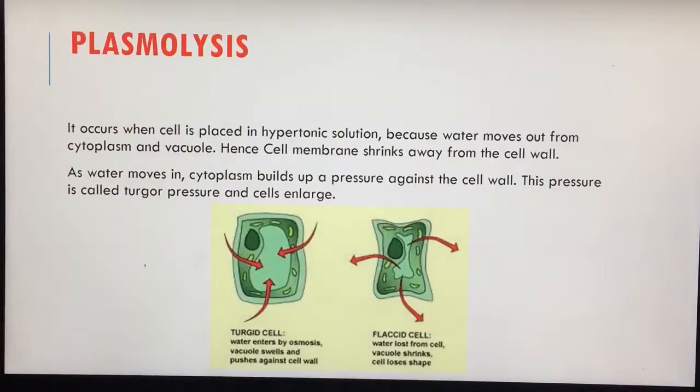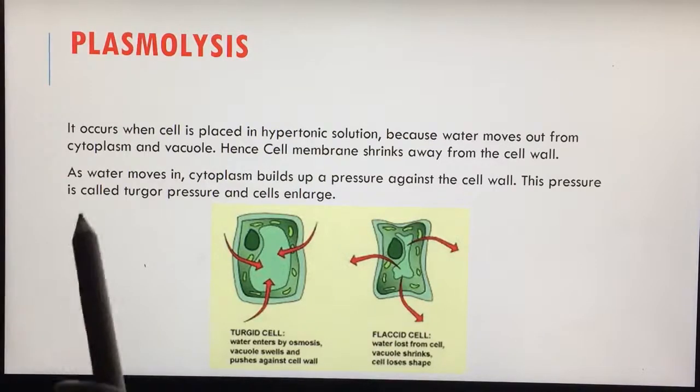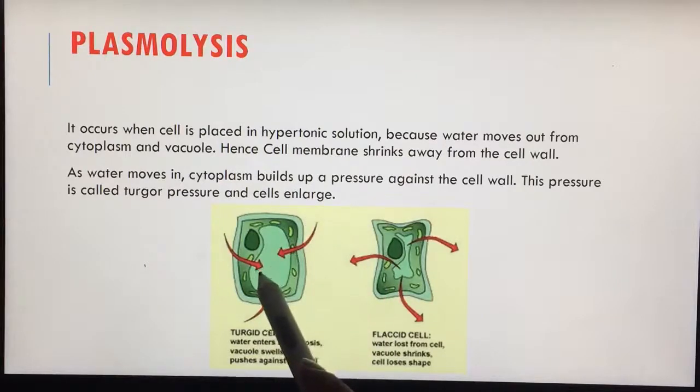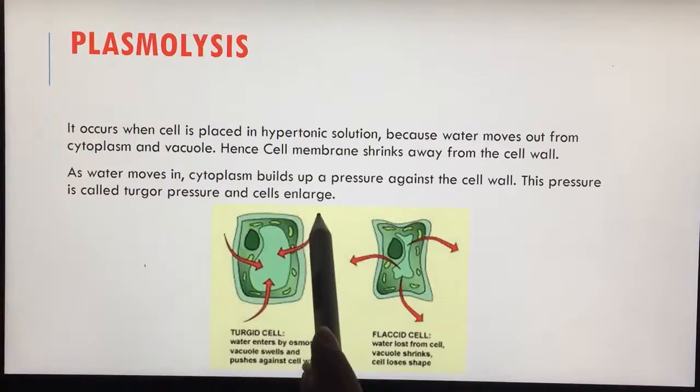What is plasmolysis? Plasmolysis is when the cell is kept in hypertonic solution. The water moves out of the cell and when the water has moved out of the cell, the cell membrane shrinks away from the cell wall and this condition is called plasmolysis. When it is the other way around, when it is kept in hypotonic solution, the water enters the cell and builds up pressure against the cell wall. This pressure is called turgor pressure and the cell enlarges and this cell is called a turgid cell.